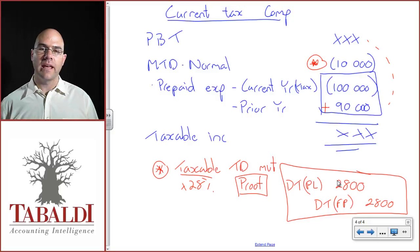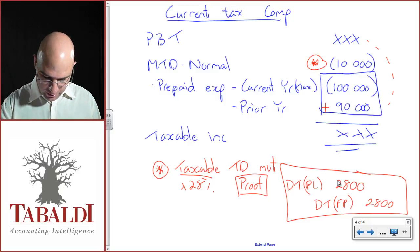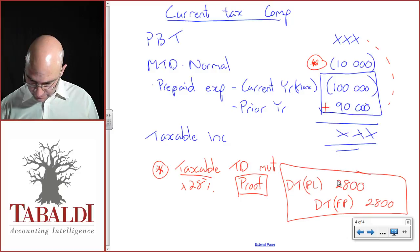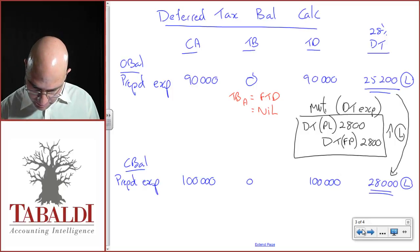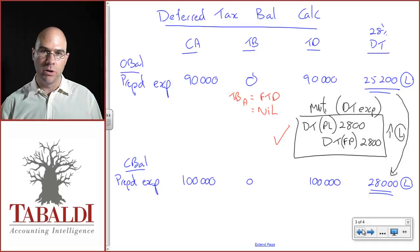Now please, this is a proof of the prior journal. So let's have a look. I've gone debit profit and loss, credit financial position, 2,800. In my deferred tax movement journal from the balance side, I went debit profit and loss, credit financial position, 2,800. It's a perfect fit.